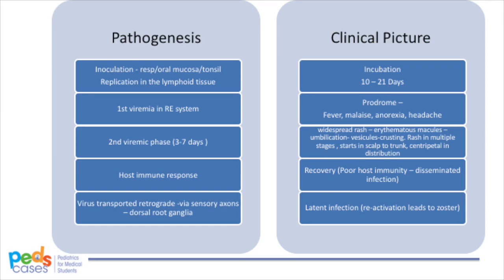Patients develop a first episode of viremia during the incubation period, which spreads the virus throughout the reticular endothelial system. This first viremia presents as a prodrome of fever, malaise, anorexia, and headache. Then, in the next 3 to 7 days, patients develop a second viremia, which causes the classic rash. The next journey of the virus depends on the host immune response. In a healthy immunocompetent host, varicella travels in a retrograde fashion via the sensory axons to end up in the dorsal root ganglia, causing latent infection.